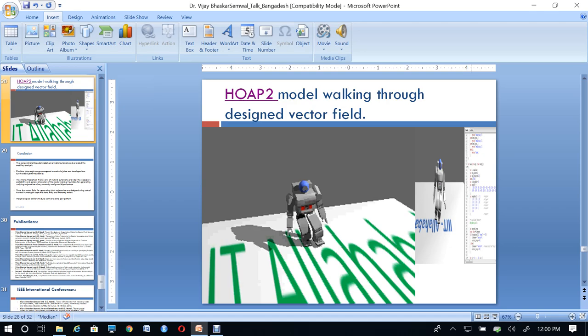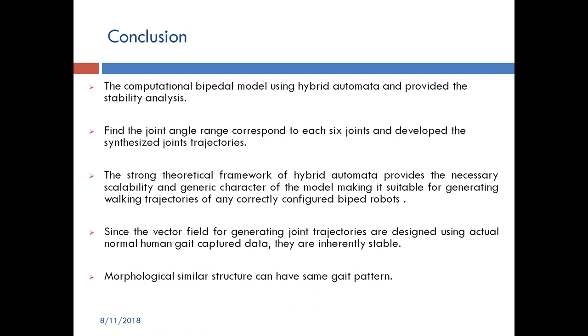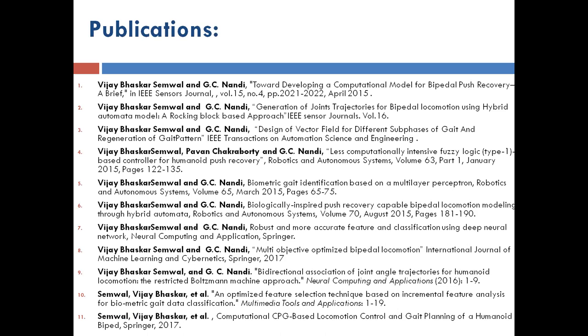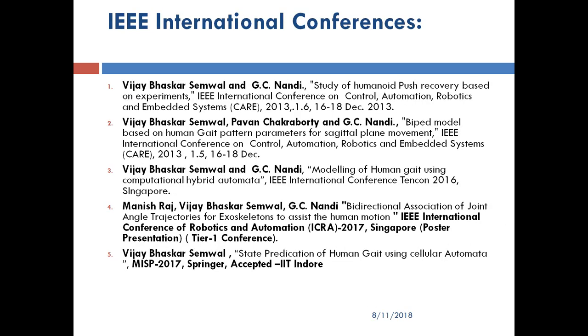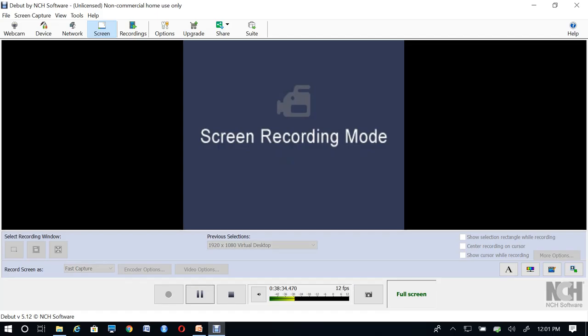I think this is enough motivation for new students about this field. I will show some international publications you can refer to related to this work. The computational model using hybrid automata provides stability and scalability for trajectory generation. These are our publications from international conferences. For any further queries I will be very happy to answer — thank you.